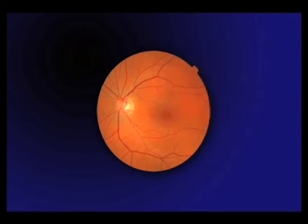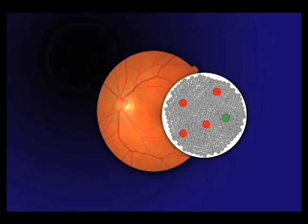In the peripheral retina, the cones are much fewer and farther apart. The rod cells, shown in gray here, dominate the periphery. They see in only black and white.